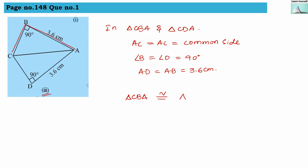Writing the congruency: triangle CBA is congruent to triangle CDA. Checking: B and D both appear in the middle — yes, they are equal. AC and AC are on one side, and AB and AD are equal to each other. So these two triangles are in congruence with each other.